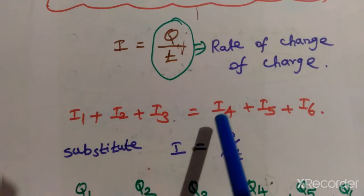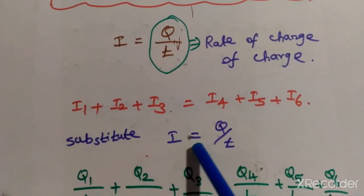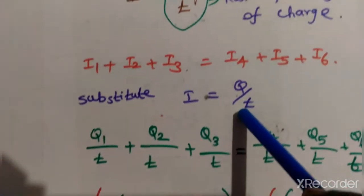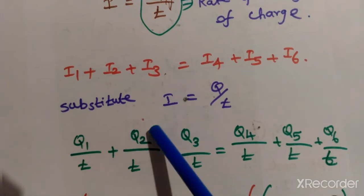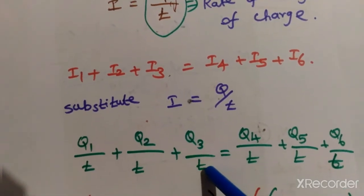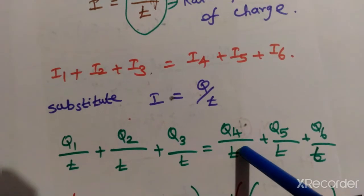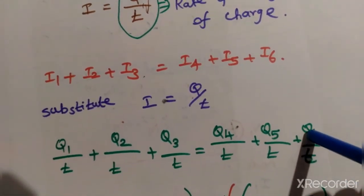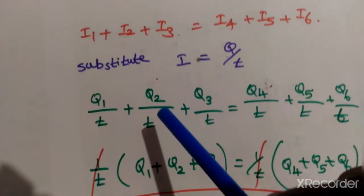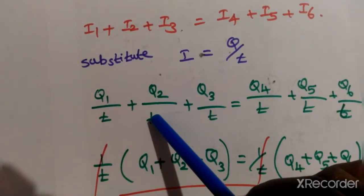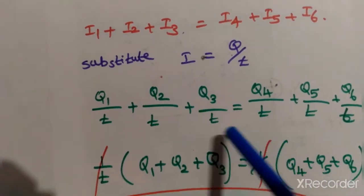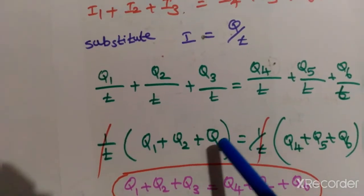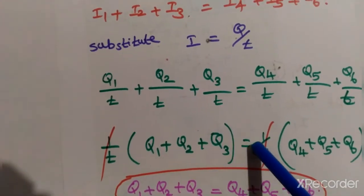We know that i equals q divided by t. So in this equation, replace each current with charge over time: i1 becomes q1/t, i2 becomes q2/t, i3 becomes q3/t, i4 becomes q4/t, i5 becomes q5/t, and i6 becomes q6/t. The term 1/t is common on both sides and cancels out.